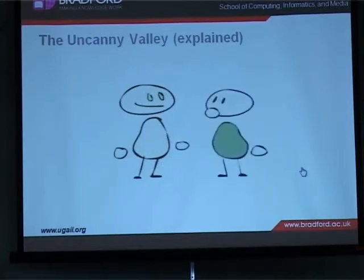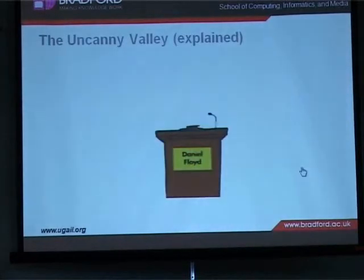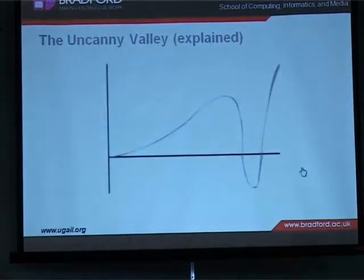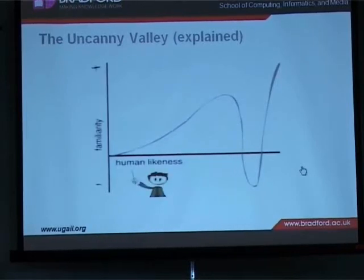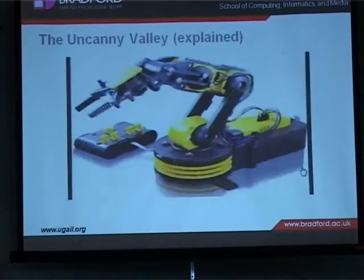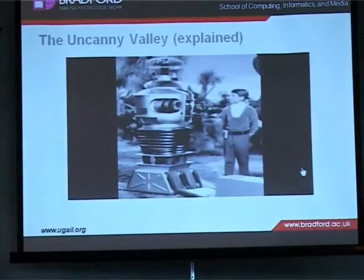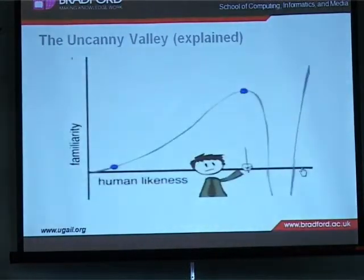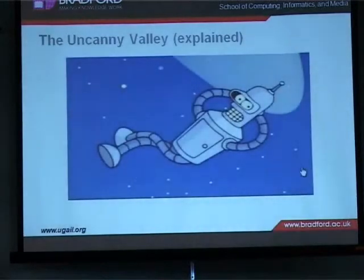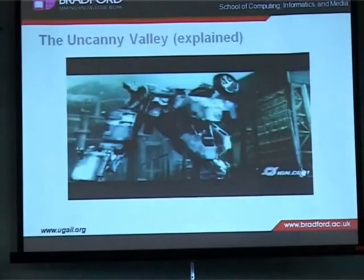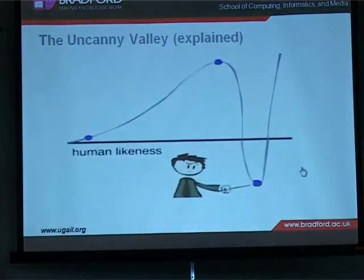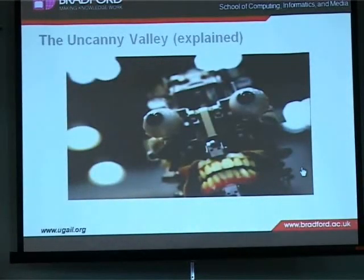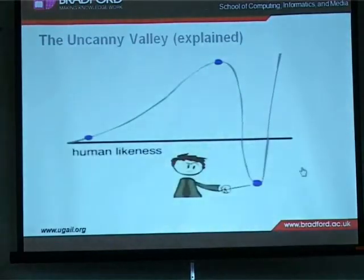A graph depicts the uncanny valley theory, showing the relationship between how human something looks and how much we like it. At the beginning of the curve, the object isn't human-looking at all. Adding a few human characteristics makes it more appealing — it gets personality and becomes cute or awesome. But past a certain point, we hit a huge drop: suddenly the object isn't cute anymore and we are freaked out. If we keep pushing beyond that valley, however, appeal begins to rise again.